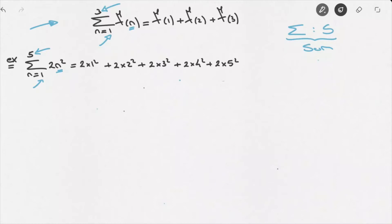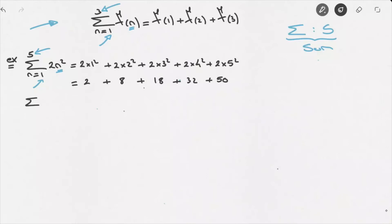We now calculate each of these terms. 2 times 1 squared would be 2, plus 2 times 2 squared — 2 squared is 4, so times 2 gives us 8, plus 2 times 3 squared — 3 squared is 9, so 2 times 9 is 18, plus 2 times 4 squared — 4 squared is 16, so 2 times 16 is 32, plus 2 times 5 squared — since 5 squared is 25, this gives us 50. Calculating all of this, we find that this sum is equal to 110.